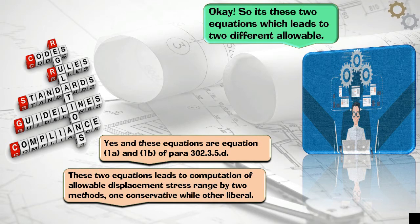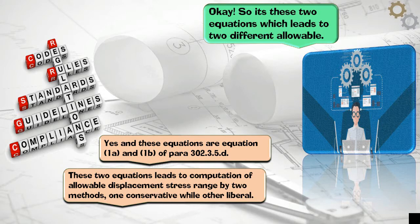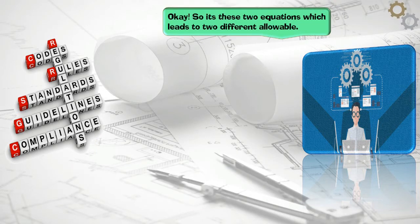These two equations lead to computation of allowable displacement stress range by two methods, one conservative while other liberal.